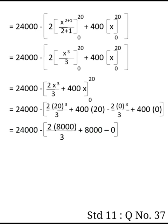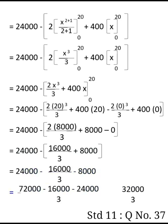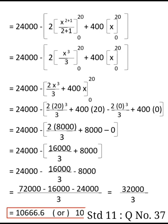So 24,000 minus 16,000 divided by 3 plus 8000. Taking LCM of 3, we get 24,000 minus the quantity 16,000 plus 24,000 divided by 3, which equals 32,000 divided by 3 minus 24,000, equals 10,666.6 or approximately 10,667 units.